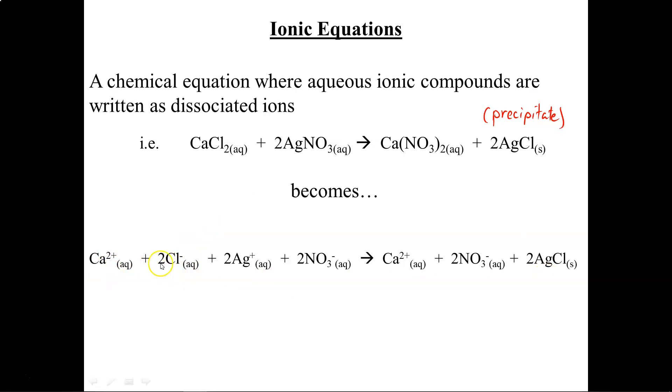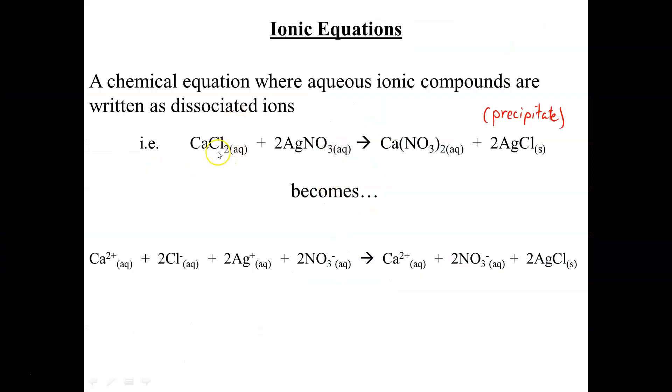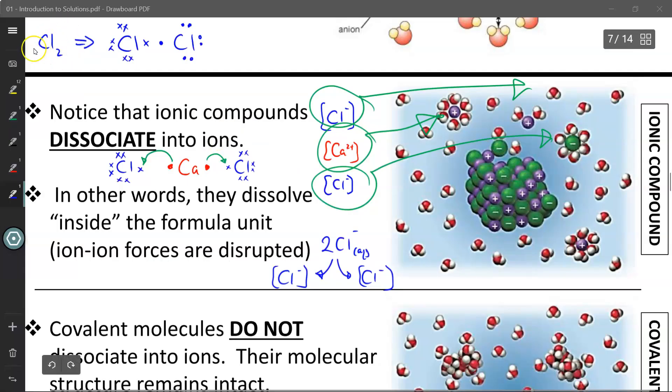Now notice how I wrote 2Cl- instead of Cl2. I wrote 2Cl- because I have two of these chlorine anions, and each of these separate ions are surrounded by water molecules. If I had written it as Cl2, that would be incorrect because Cl2 means that I have two chlorine atoms sharing a covalent bond together for stability. But that is not the case here.